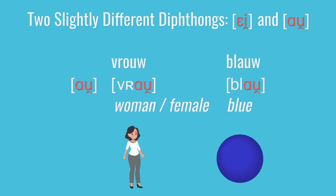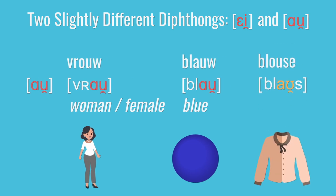The next similar diphthong is AU as in vrouw or blauw. This one is similar to the English diphthong AU as in blauws. In Dutch, you're starting from a tongue position of A, which is a lower tongue position than we start with in English. So the English diphthong is AU and the Dutch one is AU. You may also notice that the ending point in this vowel is a bit different — Dutch goes a bit further up and back in your mouth, closer to U at the end: AU. Comparing Dutch and English: AU and AU, blauw, blauws.